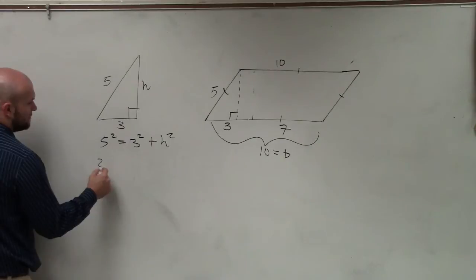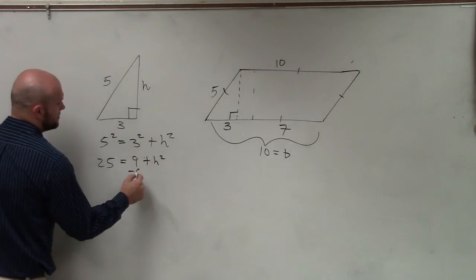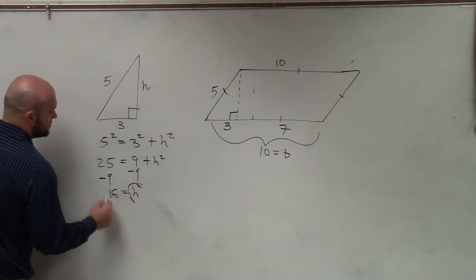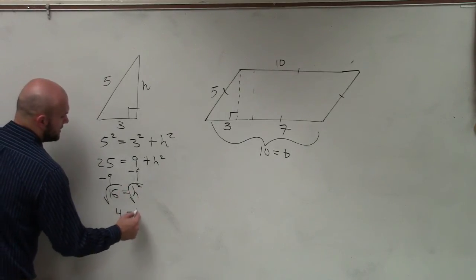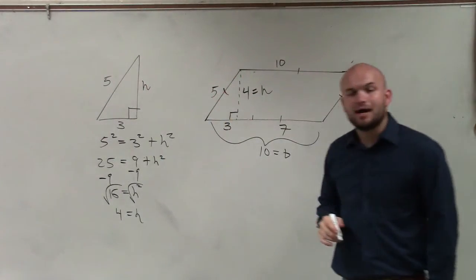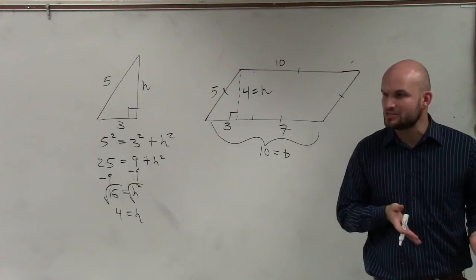So therefore, I have 25 equals 9 plus h squared, minus 9, minus 9. 16 equals h squared, square root, square root, 4 equals h. So now I have 4 equals h. Do you guys see all that? See how that takes a couple extra steps?